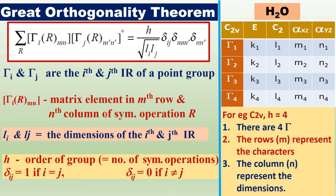H is the order of the group, equal to the total number of symmetry operations. For example, for C2V, H equals 4 because there are 4 symmetry operations, and therefore 4 irreducible representations and 4 classes. The rows of the character table are called characters, and the columns are called the dimensions.